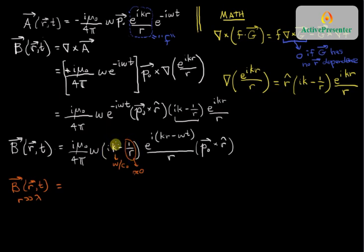much greater than lambda, one over r is much, much less than one over lambda, or much, much less than k. So that term will go away.